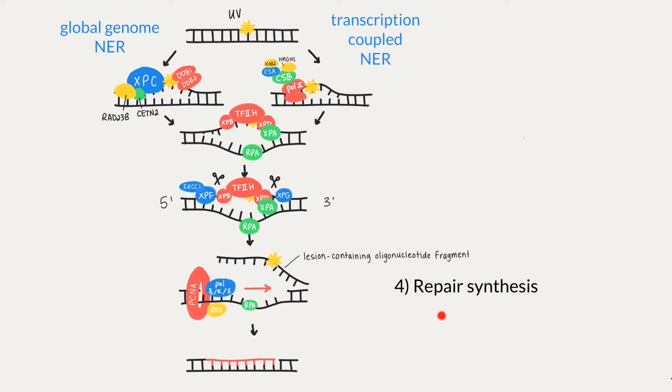Finally, we get to repair synthesis. Repair synthesis is performed by DNA polymerase delta, kappa, or epsilon, with the help of accessory proteins RFC, PCNA, and RPA. Together, they form a complex that synthesizes a new strand to replace the damaged strand with the proper nucleotides.